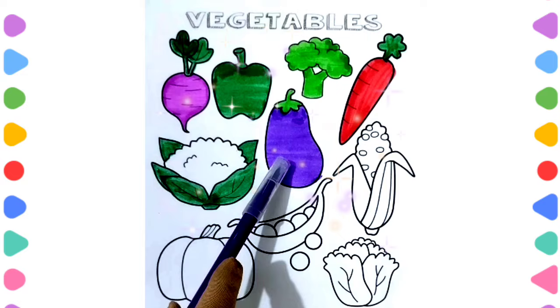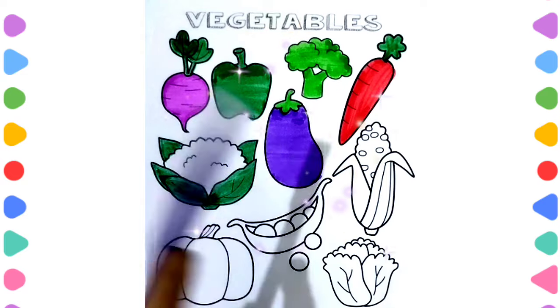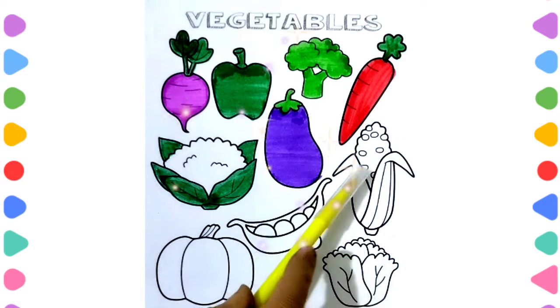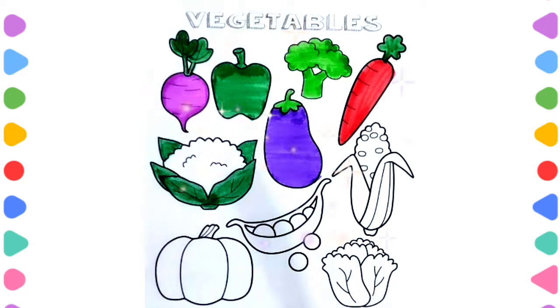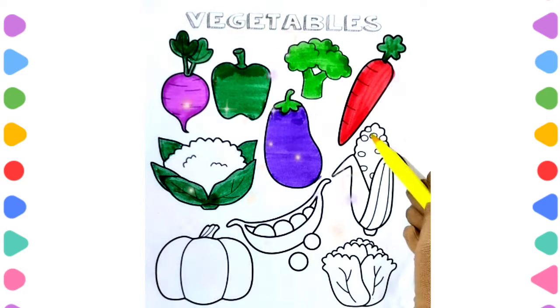Purple color eggplant. Corn — yellow color.